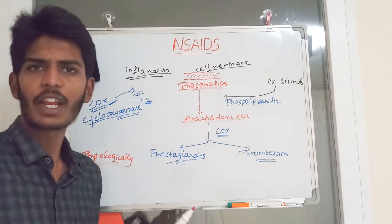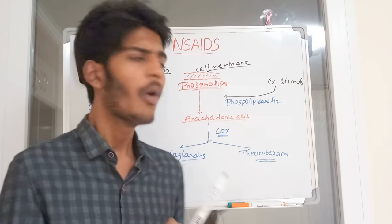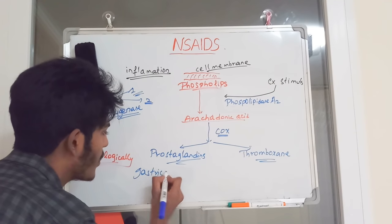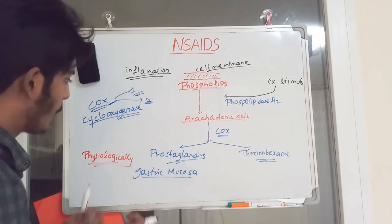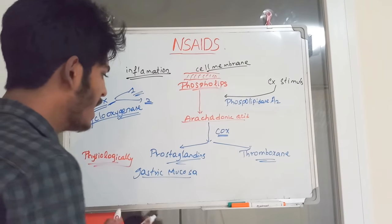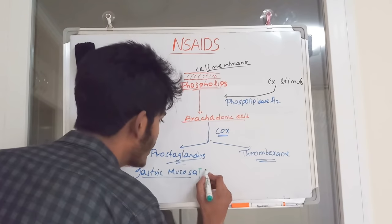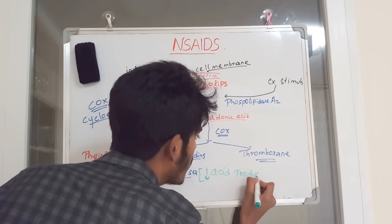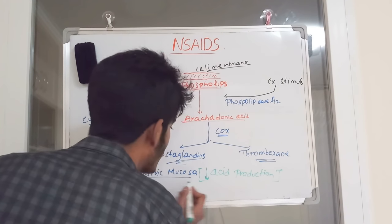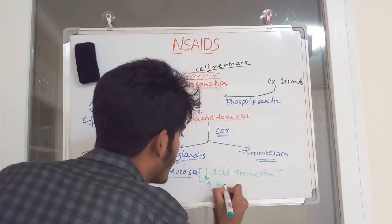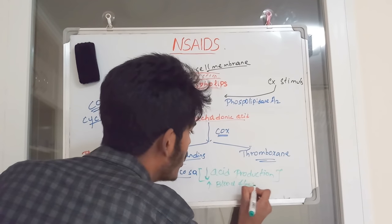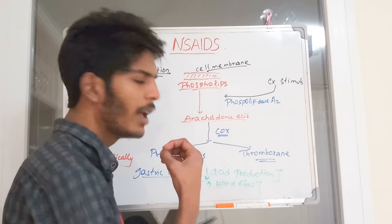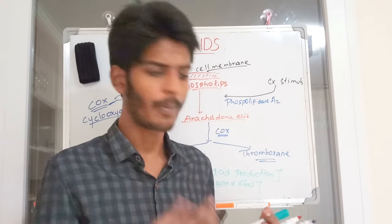Prostaglandins are required by the body to maintain protective mechanisms. They protect the gastric mucosa by decreasing acid production and increasing blood flow to the gastric mucosa. When there is damage, prostaglandins stimulate mucus growth in the stomach, providing a protective mechanism against ulcers.